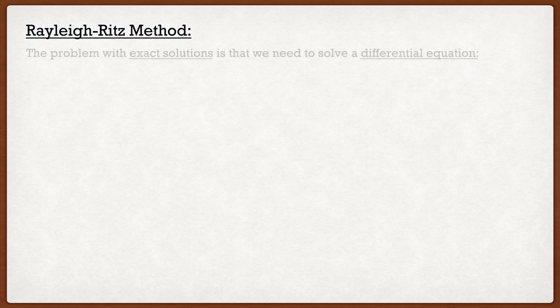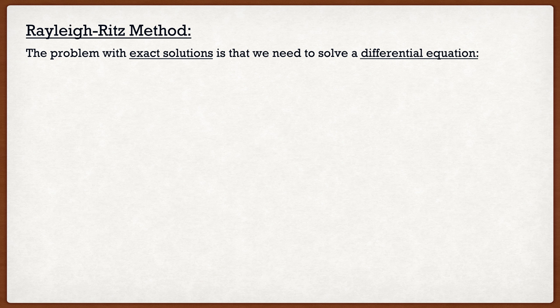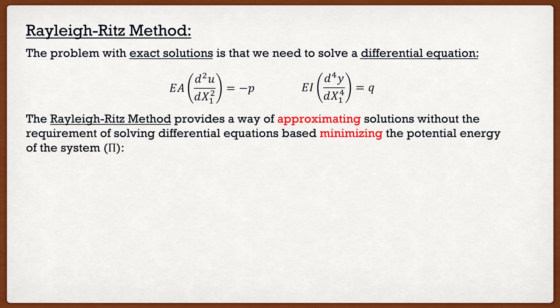So the question is, why do we need the Rayleigh-Ritz method? If we look at problems in civil engineering or mechanical engineering, if we want an exact solution, oftentimes we need to solve a differential equation. For instance, if I had an axially loaded bar or a truss, I would have to solve the differential equation on the left. If I had a beam under flexure, I would have to solve the differential equation on the right. The Rayleigh-Ritz method provides a way of approximating these exact solutions without actually needing to solve these differential equations.